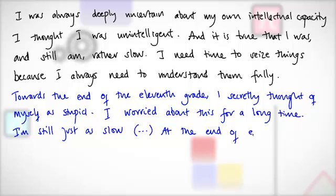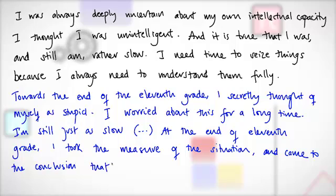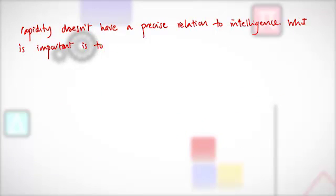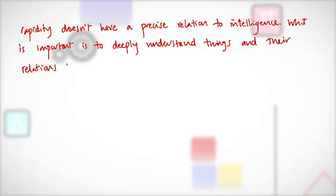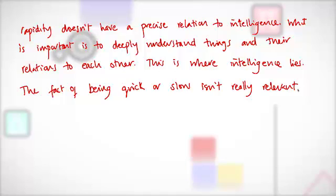At the end of 11th grade, I took the measure of the situation and came to the conclusion that rapidity doesn't have a precise relation to intelligence. What is important is to deeply understand things and their relations to each other. This is where intelligence lies. The fact of being quick or slow isn't really relevant.